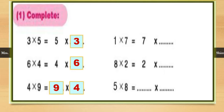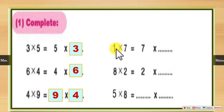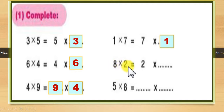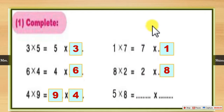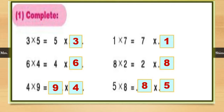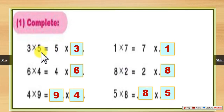The order doesn't matter, you know. One times seven equals seven times one. Eight times two equals two times eight. All we have done here is apply the rule that multiplication is a commutative operation — whether I multiply three times five or write five times three, the result is the same.